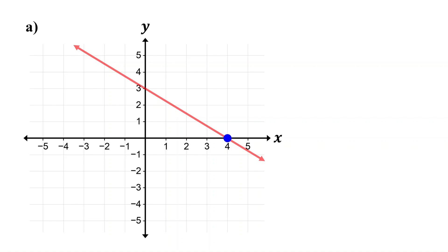The x-value is 4. The y-value at the x-intercept is 0. Therefore, the x-intercept is the point (4, 0). To find the y-intercept, first locate where the line crosses the y-axis.